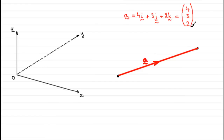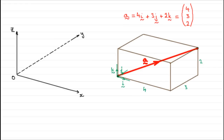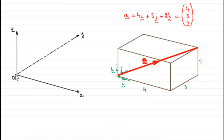Now it's quite difficult to appreciate this vector, so let's just put a cuboid around it to give it that three-dimensional feel. You can see that we've got four units in the i direction, three units in the j direction, two units in the k direction, where i, j and k are parallel to the axes x, y and z.